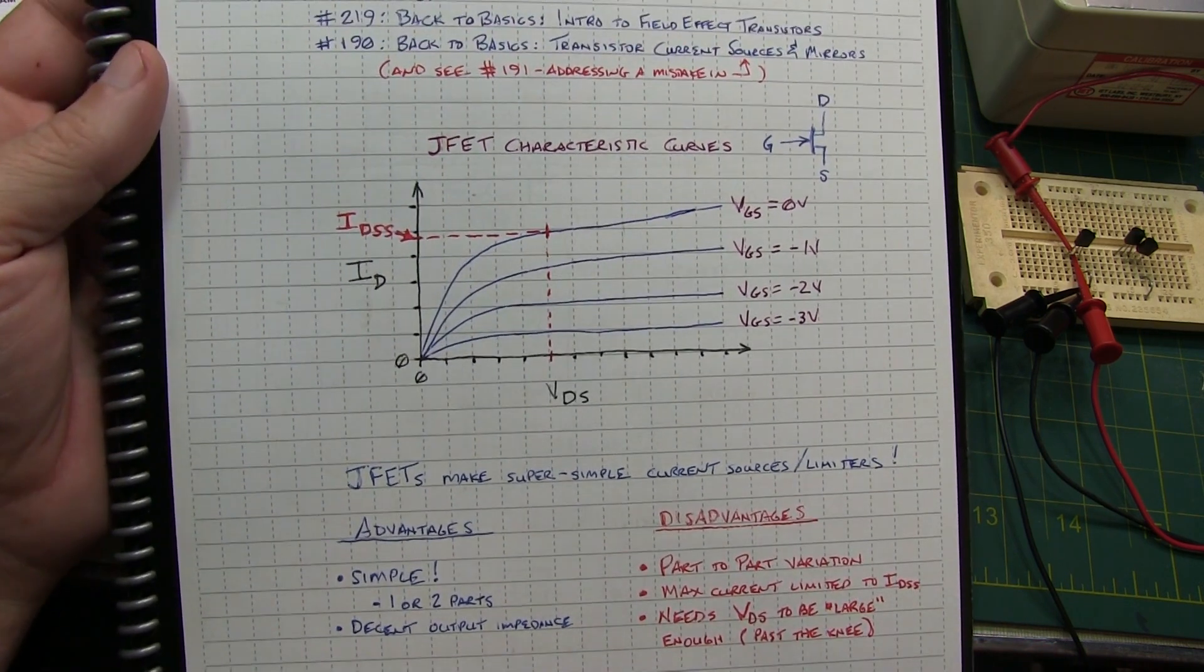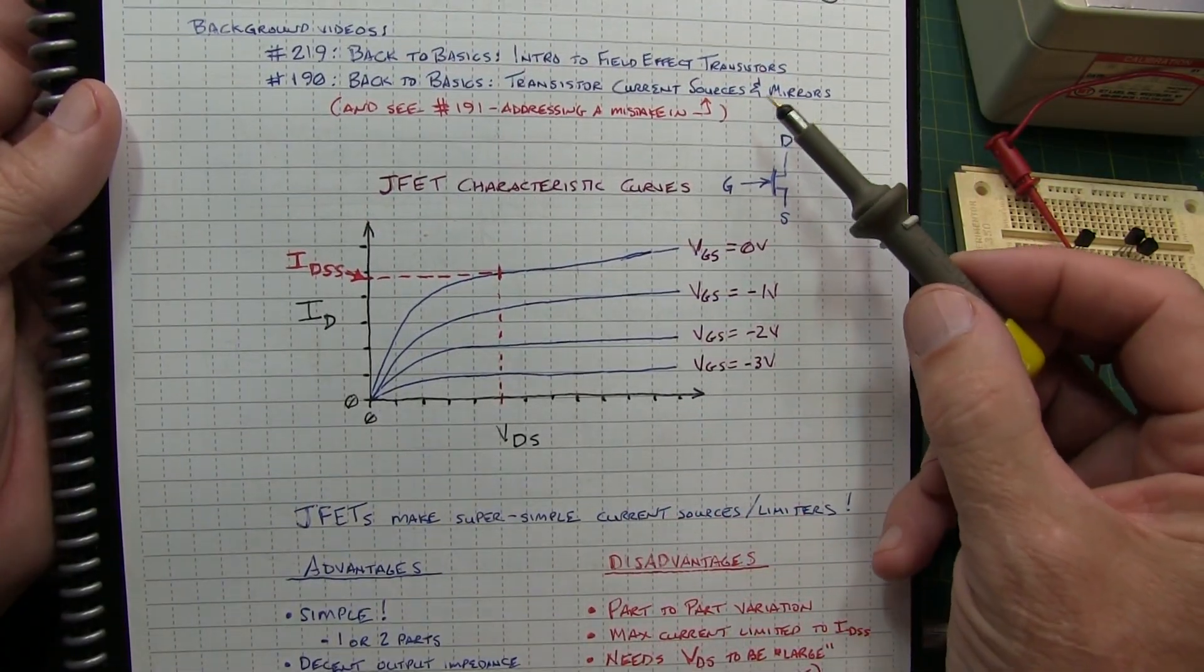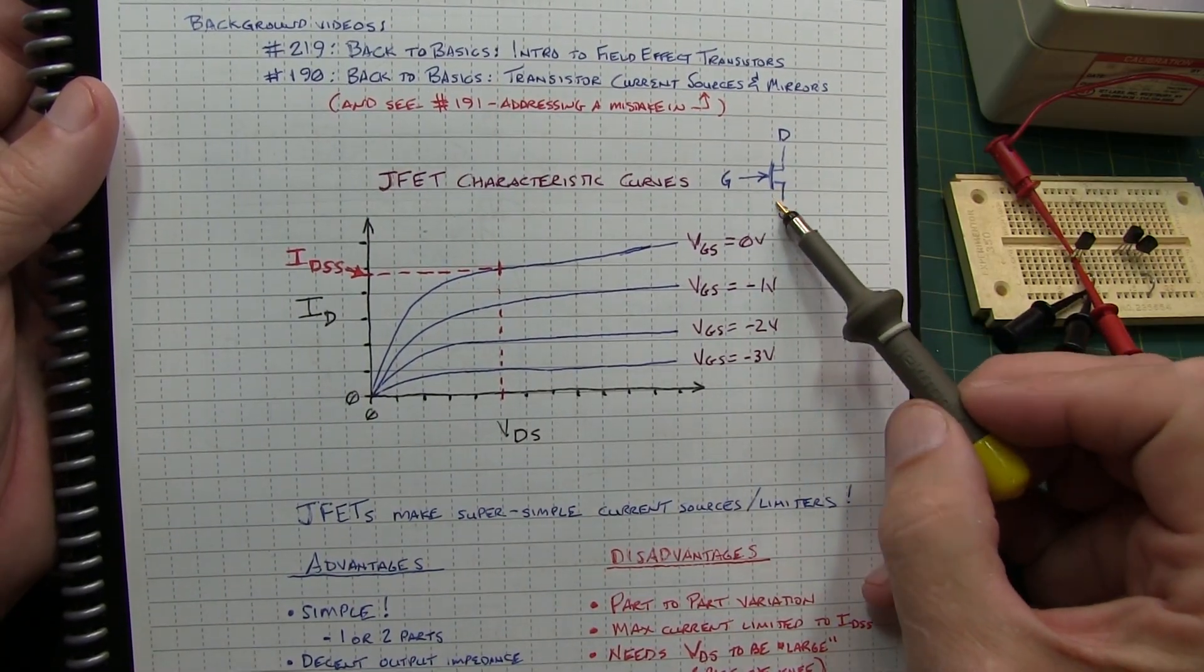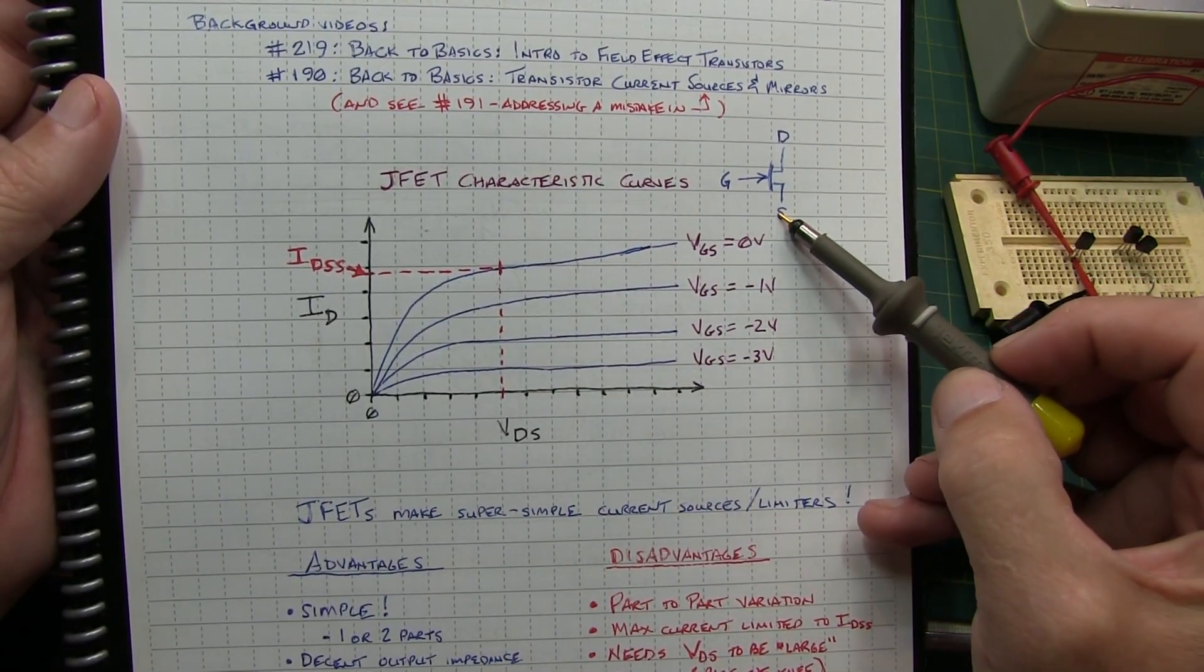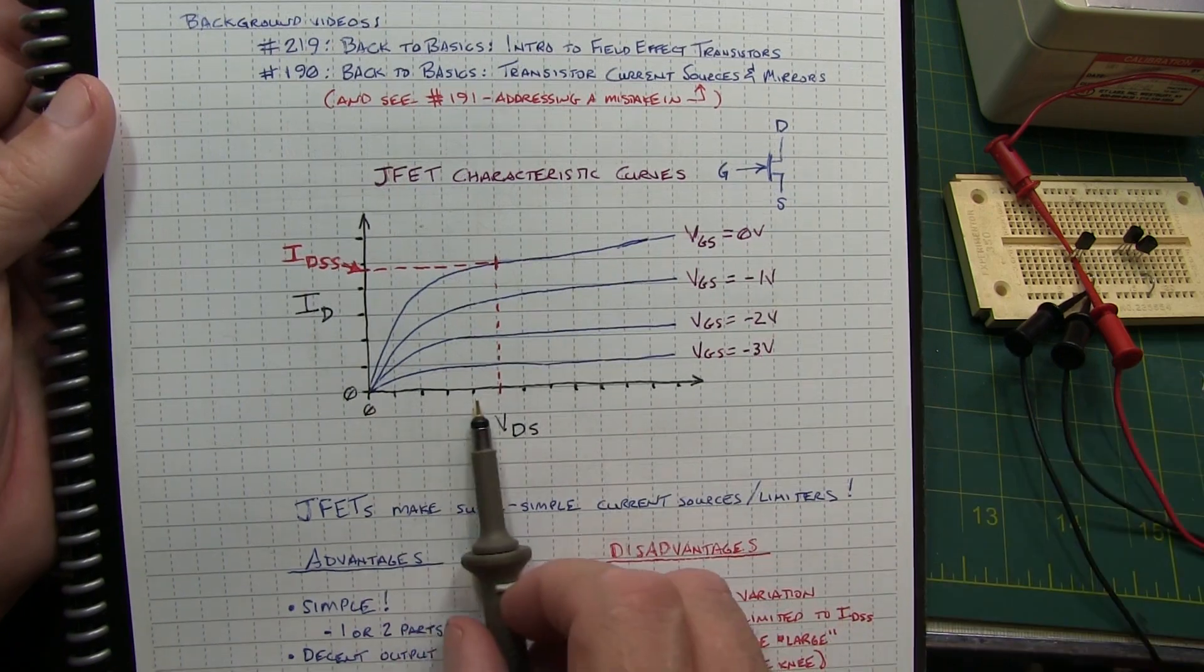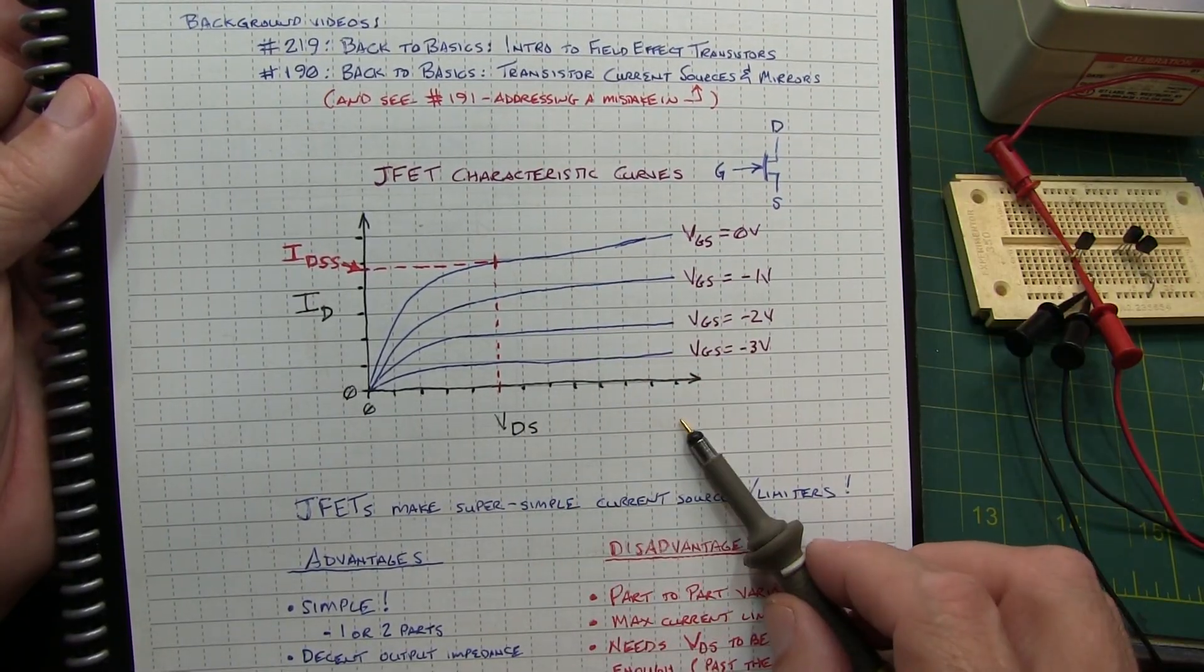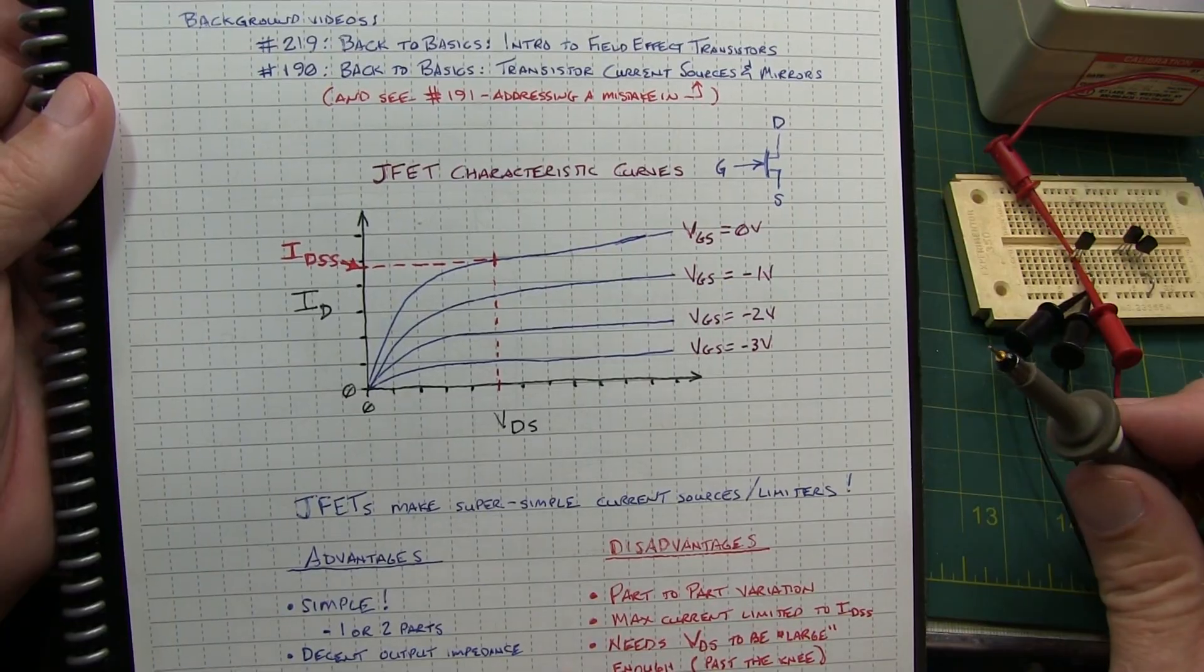But before we get started, just a quick review on the JFET characteristic curves. You may remember from the basics of the field effect transistor video that JFETs are depletion mode devices, meaning when there is no voltage across the gate to source, the drain current is going to be at its highest. When we start bringing the gate voltage down below the source voltage, we start pinching off the channel and the current drops more and more. As the drain to source voltage gets higher, you reach a point where the current in the drain is really not proportional to the drain to source voltage anymore and it approximates essentially a fixed current at a given gate to source voltage.